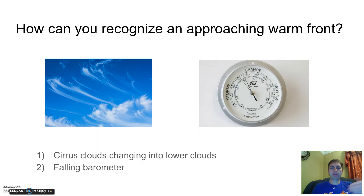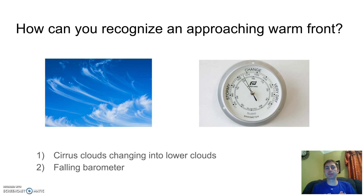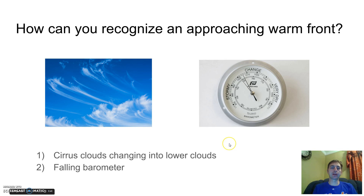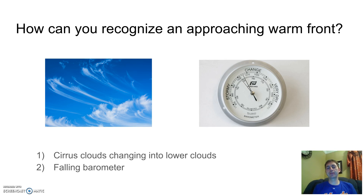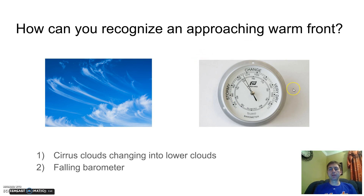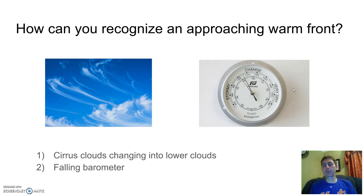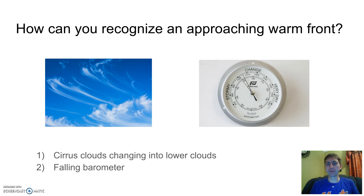Are there ways a person could recognize an approaching warm front without a weather map? Two signs. First, look at the sky — what kind of clouds are you seeing? The first sign would be cirrus clouds: very high, thin, ice-crystal clouds that appear at the leading edge of a warm front. Second, watch the barometer. A slowly and steadily falling barometer — not a rapid drop — is another way to detect an approaching warm front.